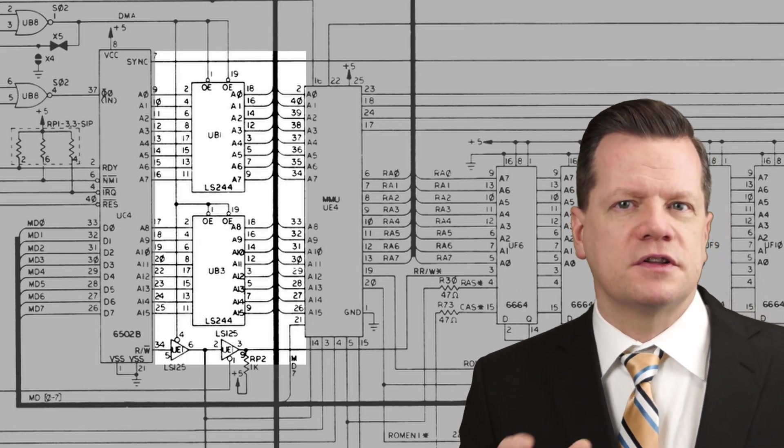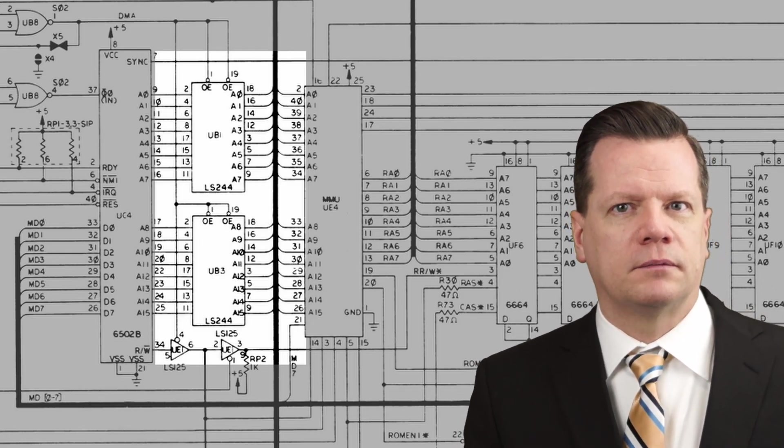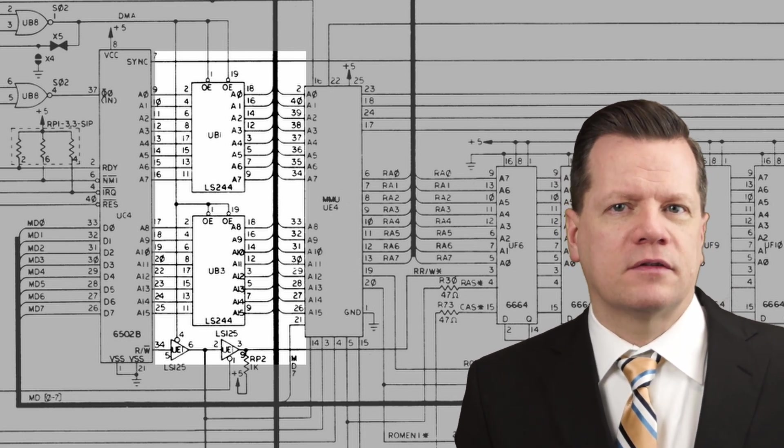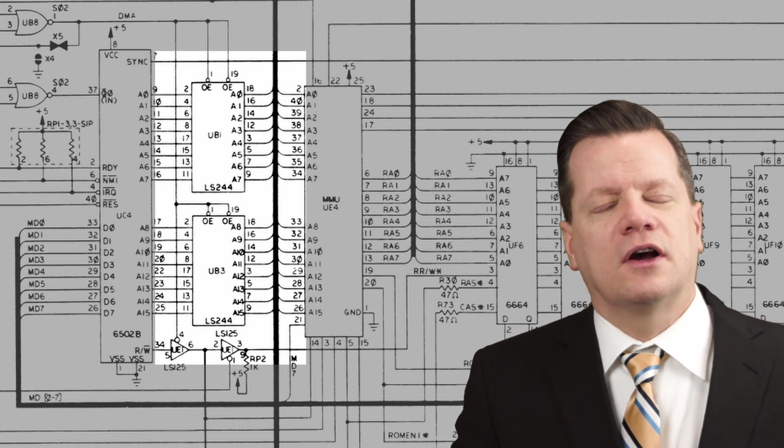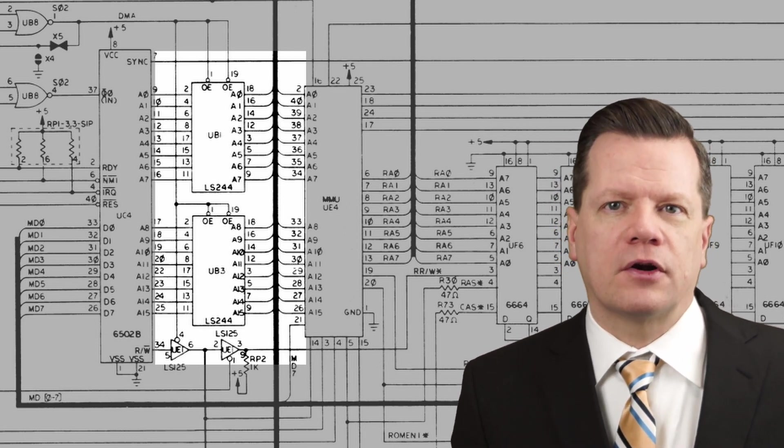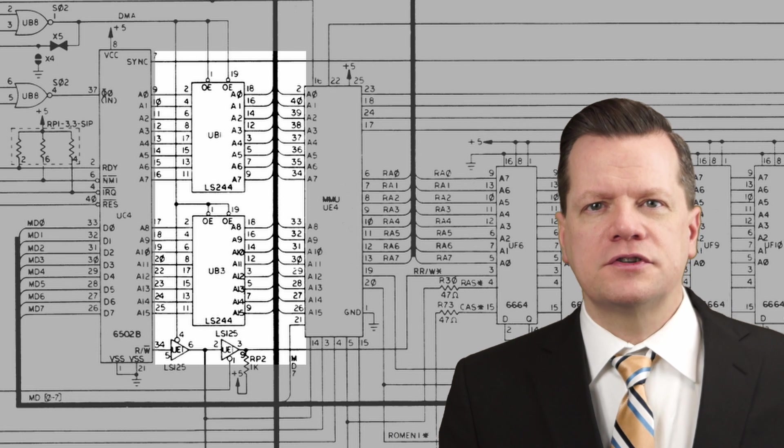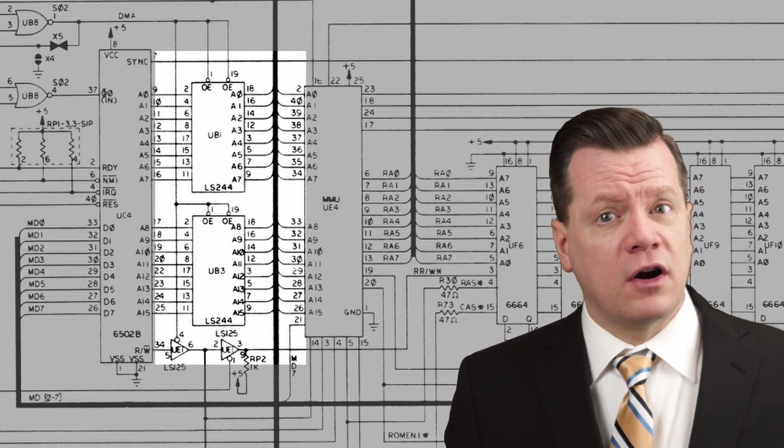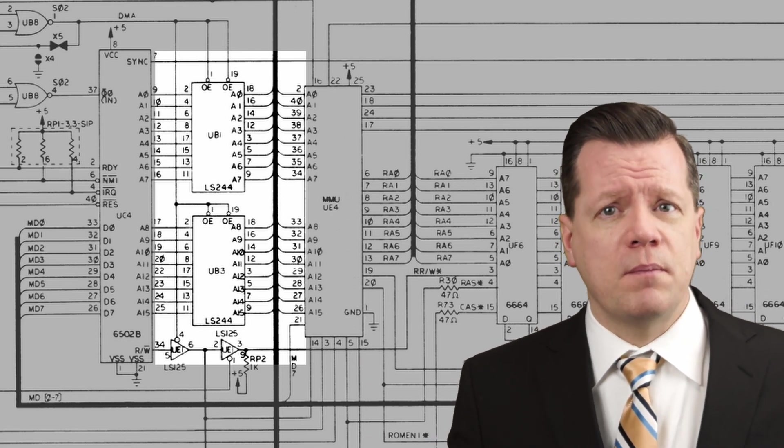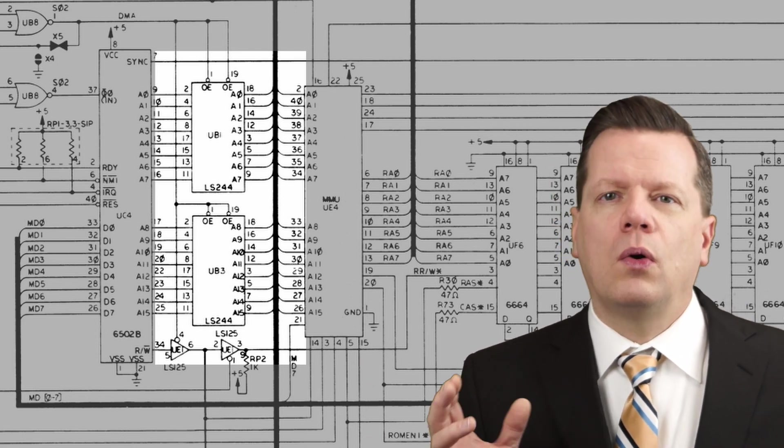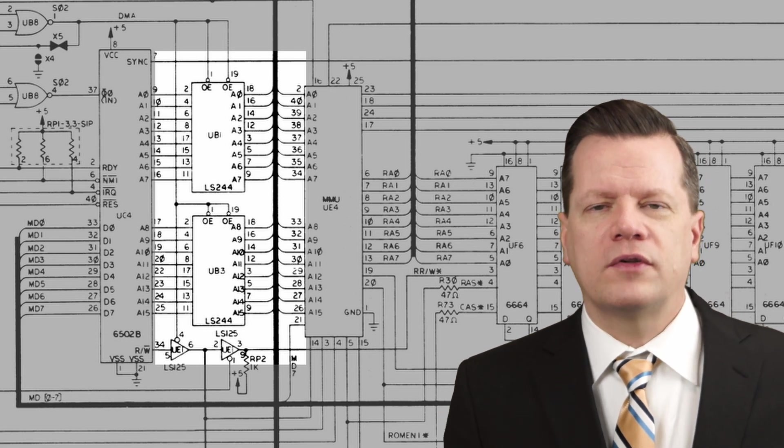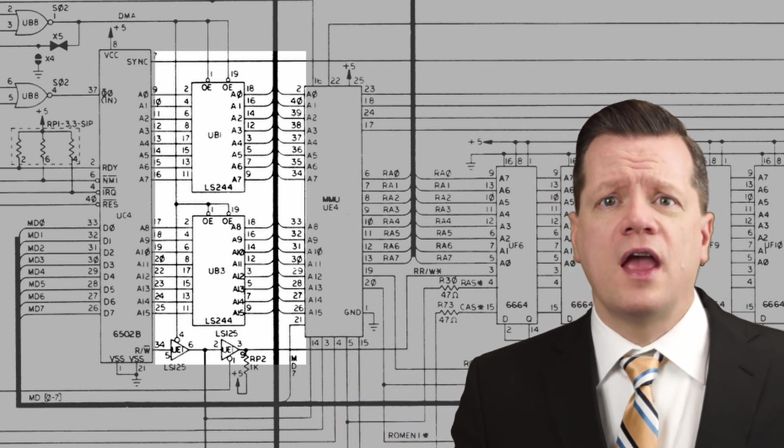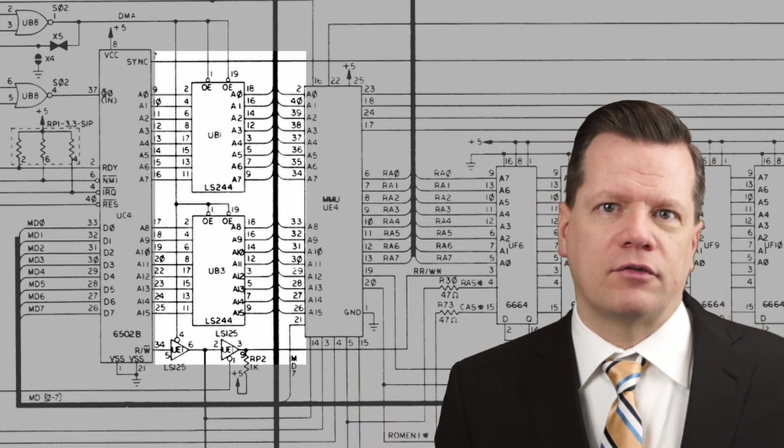A tri-state buffer performs essentially the same function as a regular buffer but instead of having two states on and off it has a third high impedance state that is essentially equivalent to it being disconnected from the circuit. This allows a single digital line to be controlled by multiple chips. Modern microcontrollers like the AVRs are able to go into a tri-state mode right out of the box. Older microprocessors didn't always have this function so you'll often see tri-state buffers connected to microprocessors and interfacing them with either the data bus or the address bus.